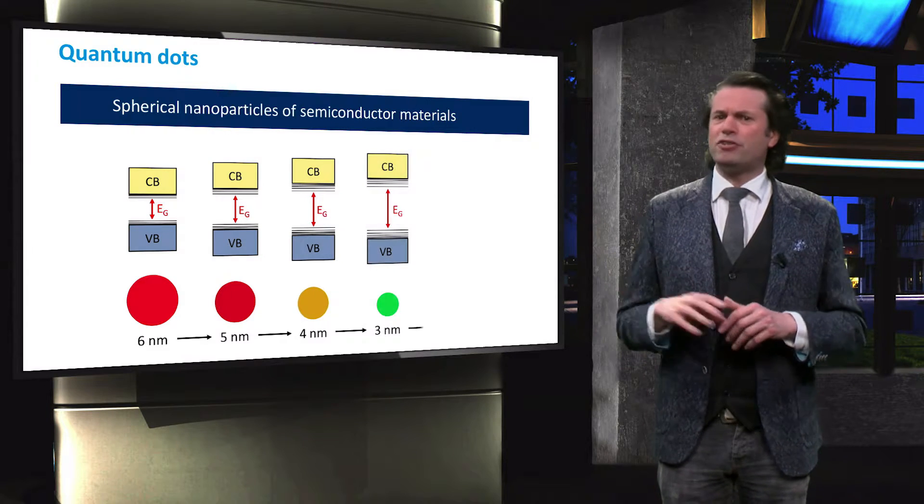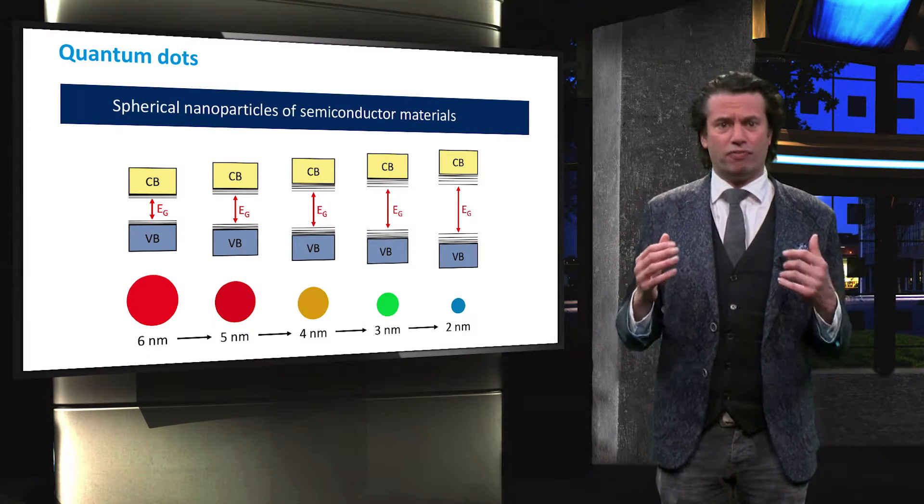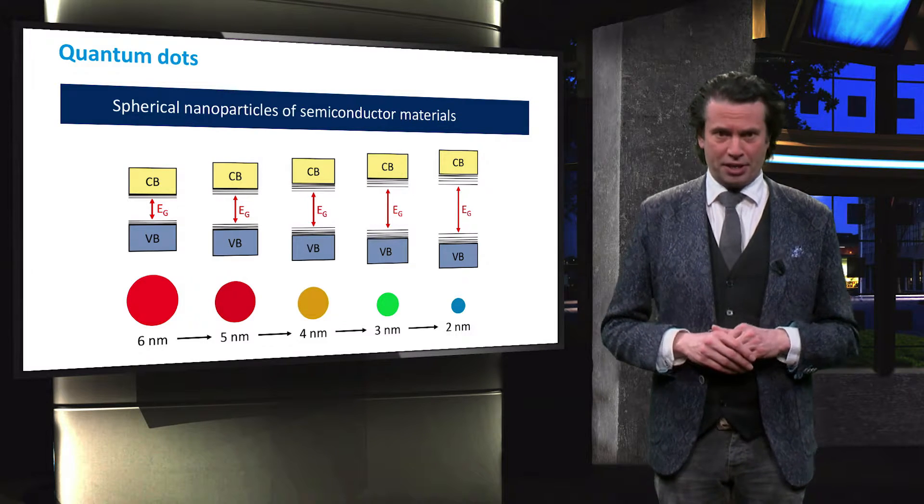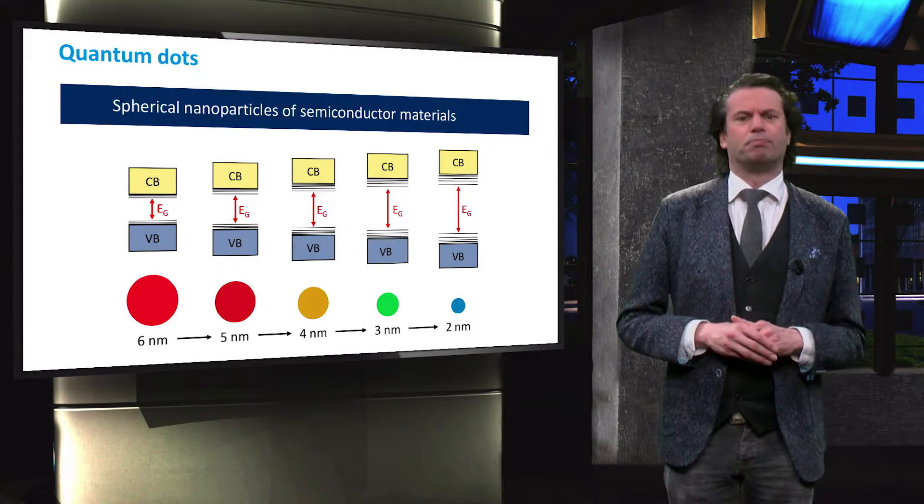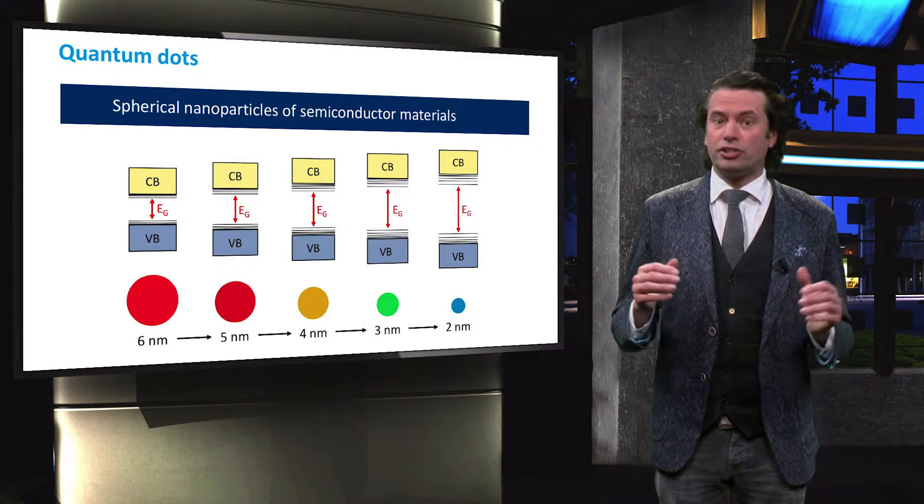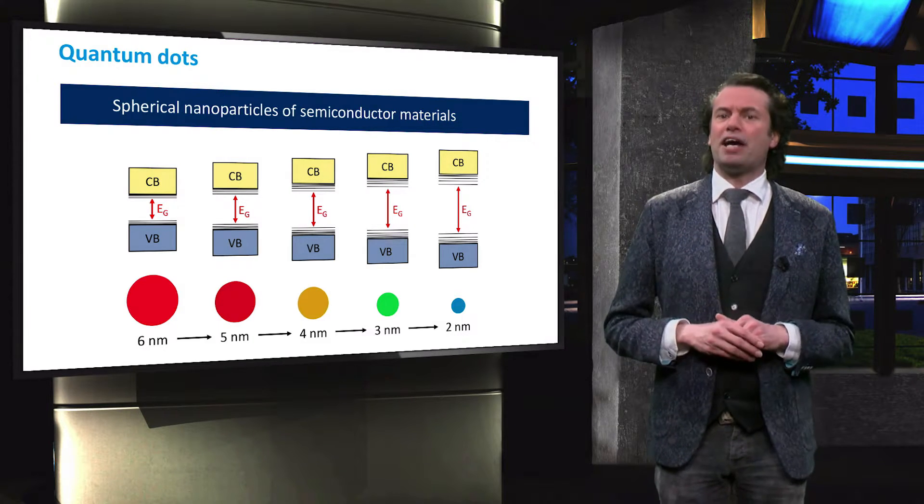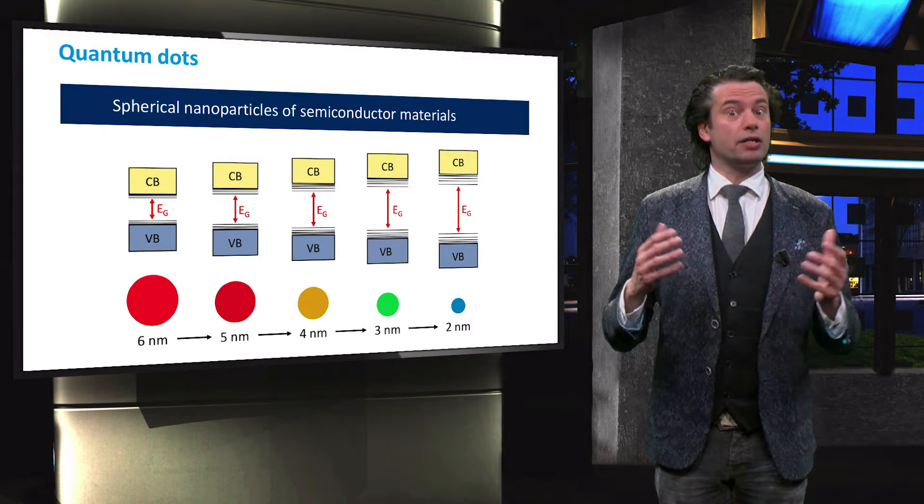The bandgap of the quantum dots depends strongly on their size. At a diameter of 6 nanometers, for instance, the particle has a relatively small bandgap energy and already starts absorbing in the red part of the spectrum. As the particle size decreases, the bandgap energy of the nanoparticle increases.